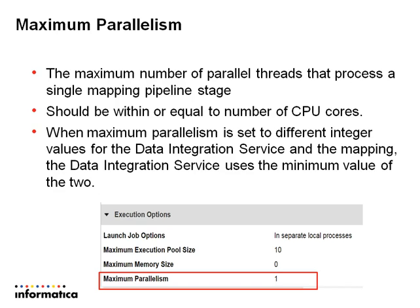In Informatica Data Quality, there is an important concept in your Data Integration Service. There is a property called Maximum Parallelism, shown on screen under execution options. You need to set this maximum parallelism — which defaults to one — to a larger value. If you increase it to four, then every session or single process can have at most four threads for a single mapping pipeline stage. For example, you can have four reader threads if set to four, or three reader threads if set to three.